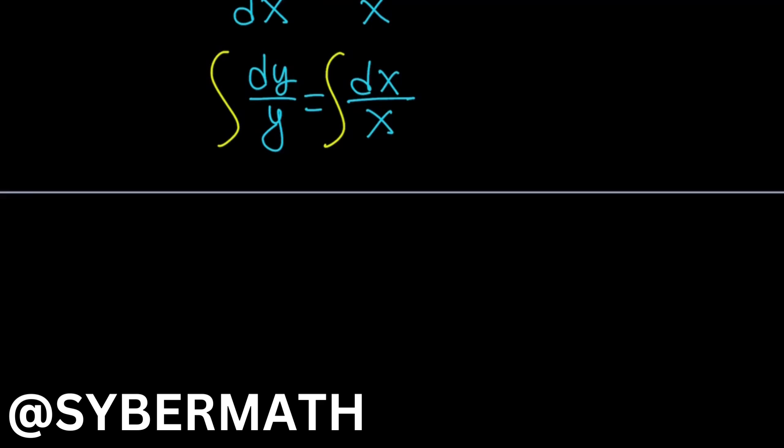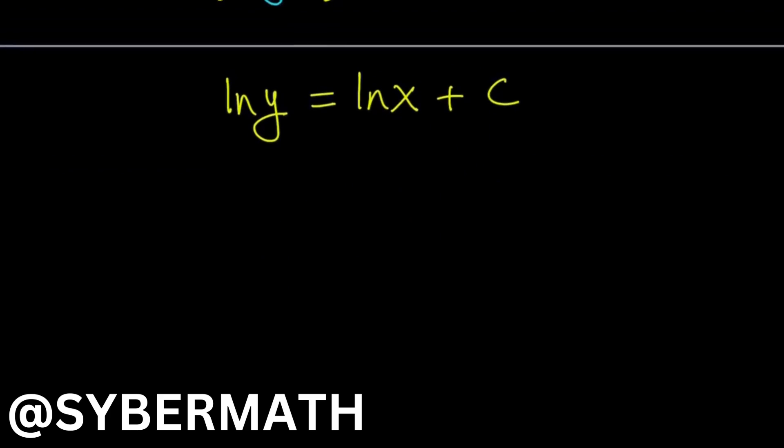So what is the integral of one over y dy? It is just ln y. Like I said earlier, I'm not going to use the absolute value, just simplify it, oversimplify whatever you call it, and assume that all the variables are positive. And the right hand side, the integral of one over x is ln x, and then I'm just going to add a constant c.